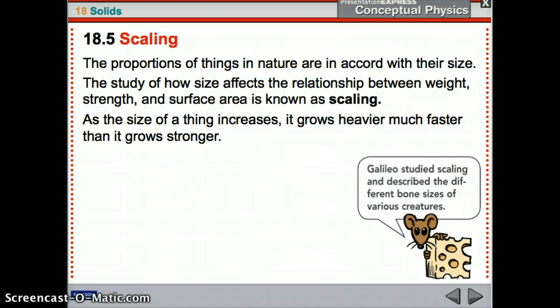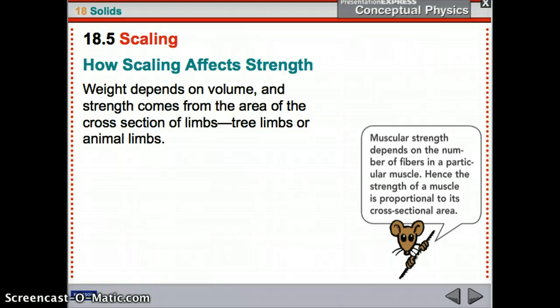As the size of something increases, it gets heavier much faster than it gets stronger. So, as you're scaling up that ant, it gets heavier faster than it gets stronger. So, it's not able to hold itself up. Weight depends on volume, right? So, more mass in a certain space, you get more weight. And strength depends on the cross-sectional area of limbs. So, a big tree trunk will hold up a big tree. You have a tiny trunk, and it's going to hold up a small tree. Right? That's strength.